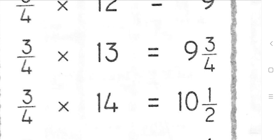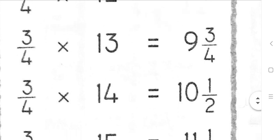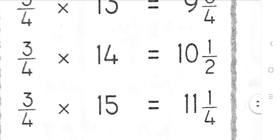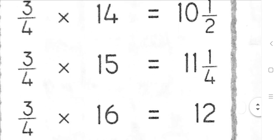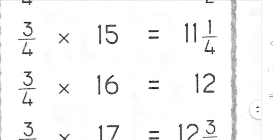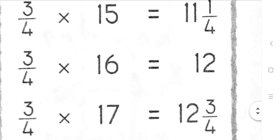3 quarters 15s are 11 and a quarter. 3 quarters 16s are 12. 3 quarters 17s are 12 and 3 quarters.